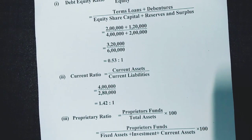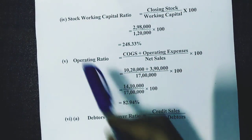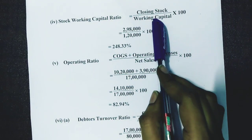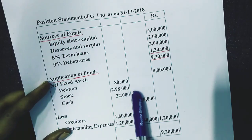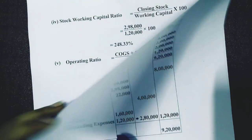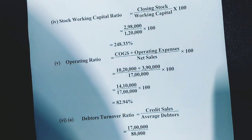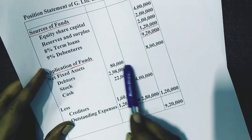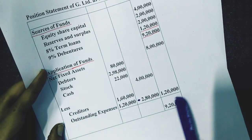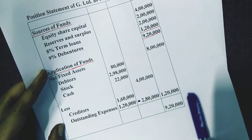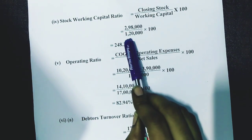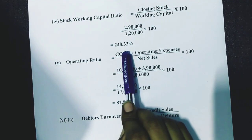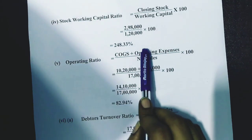The next one is the stock to working capital ratio. This is a balance sheet ratio, so all amounts come from the balance sheet. Closing stock is found in current assets — it is rupees 2 lakh 98,000. Working capital is current assets minus current liabilities. The current liabilities total is rupees 1 lakh 20,000. So the calculation is 2 lakh 98,000 divided by (2 lakh 98,000 minus 1 lakh 20,000) into 100, giving a stock to working capital ratio of 248.33.